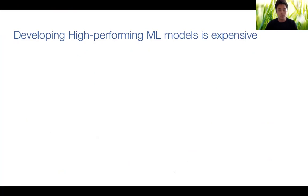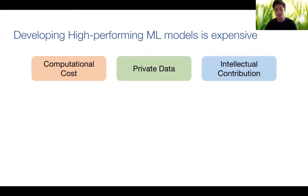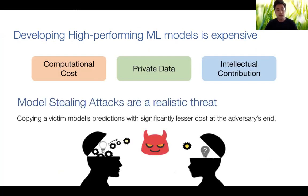Training a machine learning model is expensive due to the computational cost of training, because collecting a large and good dataset is expensive, and because the model itself is an intellectual contribution. Since a machine learning model is expensive, an adversary might want to steal it by copying a victim model's predictions, which would be much cheaper than training a model from scratch.